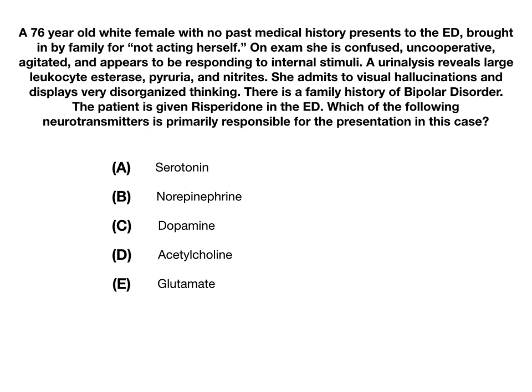Pause the video if you would like some time to think about it personally before I walk you through it. So if you're ready, here we go. I've highlighted in red what you should pay close attention to: she's confused, uncooperative, agitated, and appears to be responding to internal stimuli. Whenever you get this, which is termed altered mental status, you need to start to think to yourself, why is this patient altered? Because the differential diagnosis for altered mental status is really huge — it could be anything neurological, anything psychiatric, it could be endocrine, it could be really anything.